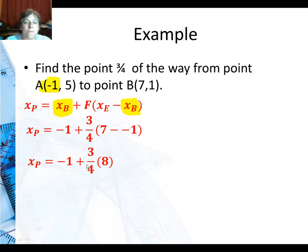So negative one plus three-fourths times eight because seven minus negative one is seven plus one. And three-fourths times eight is six. Negative one plus six is five. So my x coordinate is five.